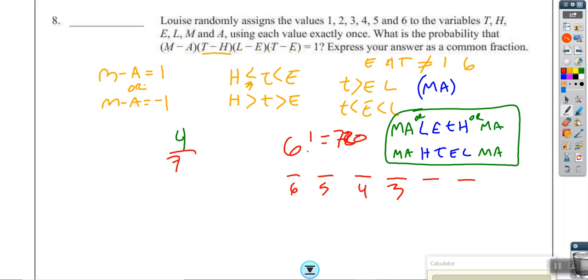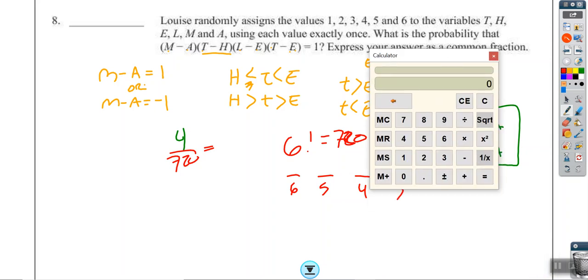So four over 720. Well, I know that can be reduced. So I'm going to pull up my calculator. I'm going to say 720 divided by four, you probably did in your head, is equal to one over 180. And there's your answer. All right. So there we go. And I might get home on time.